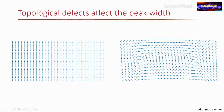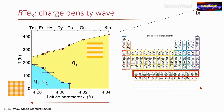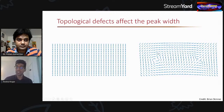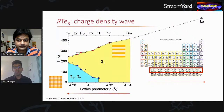So what we're measuring in the peak width is how many topological defects we actually have. When you hit the material with light, topological defects form — and that's different from what happens in thermal equilibrium, where simply turning up the temperature does not form these defects. A simple example of a topological defect you'd be familiar with is a vortex, like a tornado — you can think of these as little tornadoes of the charge density wave.